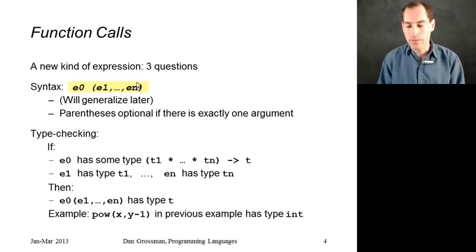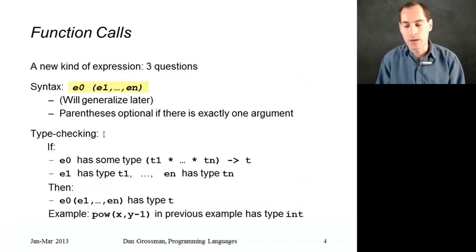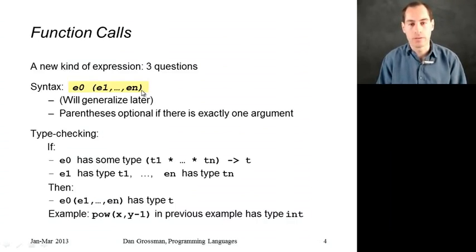When we had something like pow of 2 and 2 plus 2, the first expression, pow, we'll look that up in the dynamic environment to get a function. Then these other arguments we'll evaluate, and those will be the arguments of the function. Syntactically, it's just expression, and then more expressions in parentheses, separated by commas. You don't need the parentheses if there's exactly one argument, but if there's 0 or 2 or 3 or 4, then you do.